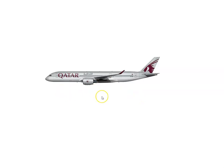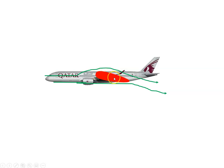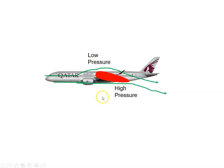If we have an aircraft flying along, the wing — just zoomed in on the wing here — the wing has air flowing over the top of it at a higher speed than the air flowing underneath it. So as the air speeds up over the top of the wing, that gives us a low pressure, and the air underneath the wing will have a high pressure.